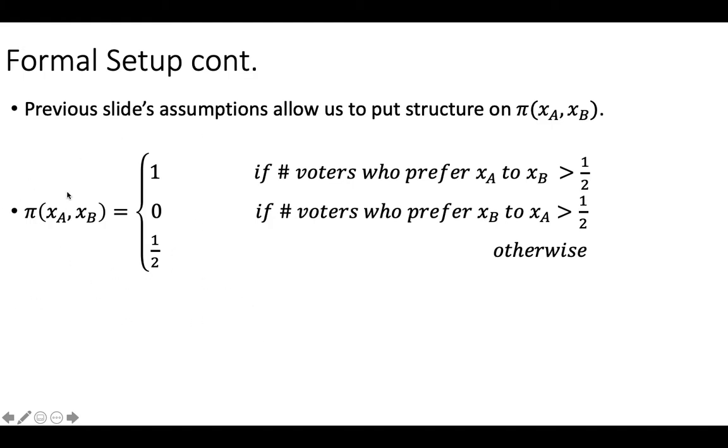So this allows us to give structure to this probability function here, this pi function. So remember, this is for the probability of party A winning. They're going to have a probability one of winning if the number of voters who prefers their policy A to policy B is greater than one-half. They will have a probability of winning of zero if the number of voters who prefer B's chosen policy to A's chosen policy is greater than one-half, and then it's going to be just a coin flip otherwise. And then you just flip all these signs for one minus pi for party B.